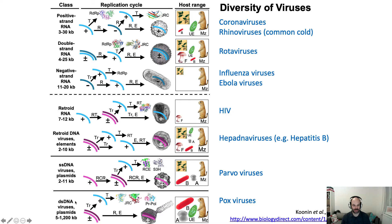A lot of other viruses are the classic, so-called normal double-stranded DNA viruses. This figure also illustrates which kinds of organisms each group of viruses infects. The coronaviruses, for example, infect all kinds of organisms — plants, bacteria, unicellular eukaryotes, metazoans — in other words, animals. Some viruses only infect a few kinds of organisms, but in general most of these groups of viruses infect multiple kinds of organisms.